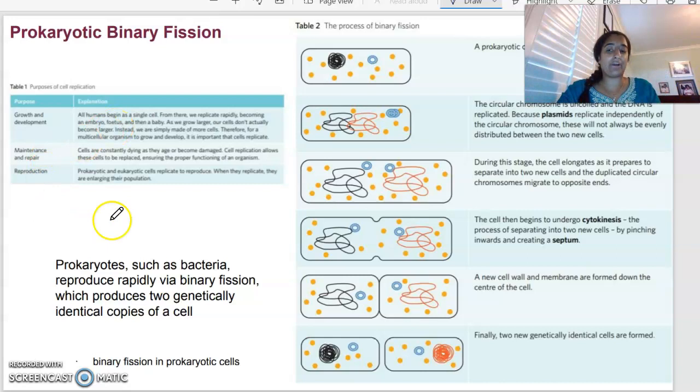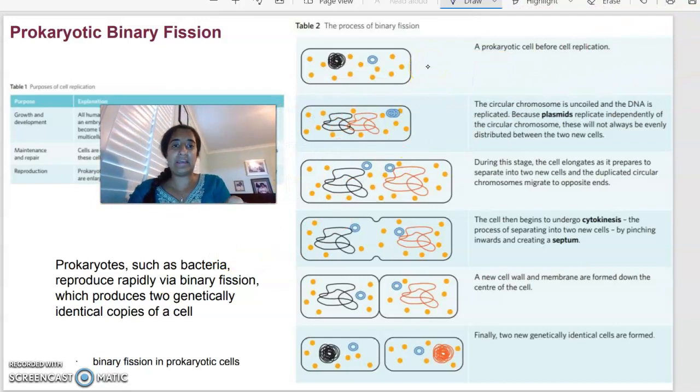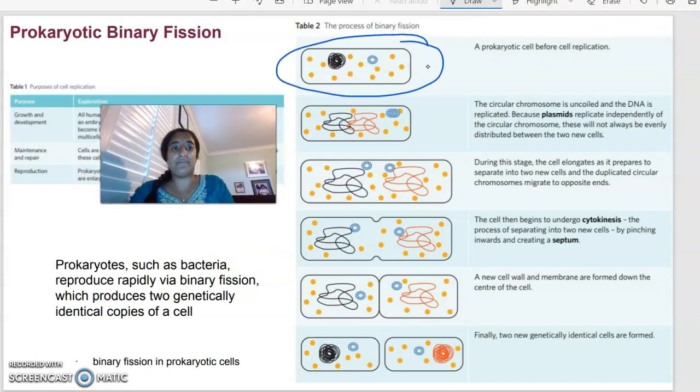Looking at prokaryotes, things like bacteria, they reproduce by this process called binary fission, producing two genetically identical copies of a cell. We can see here that we have a cell before replication. It has circular chromosomes, DNA, not in a nucleus, just in the cell. And what happens first is that DNA is going to replicate. It's going to create another copy of itself. The cell is then going to elongate, which means come a bit longer.